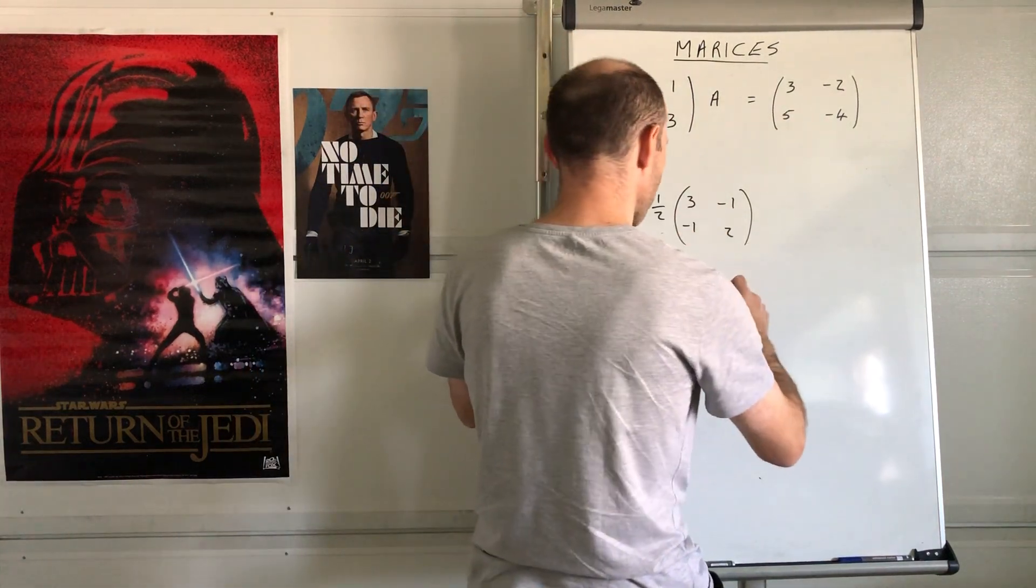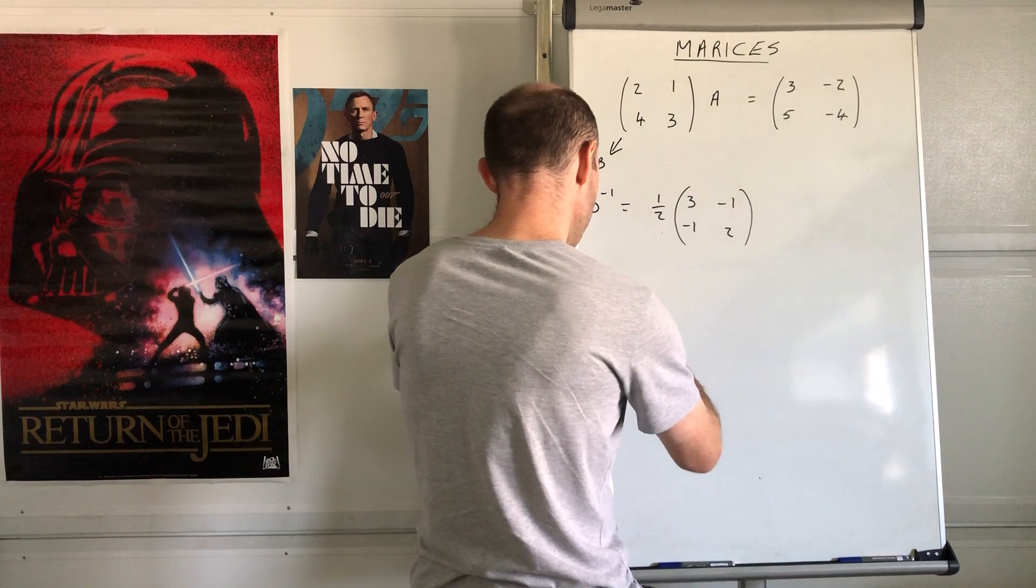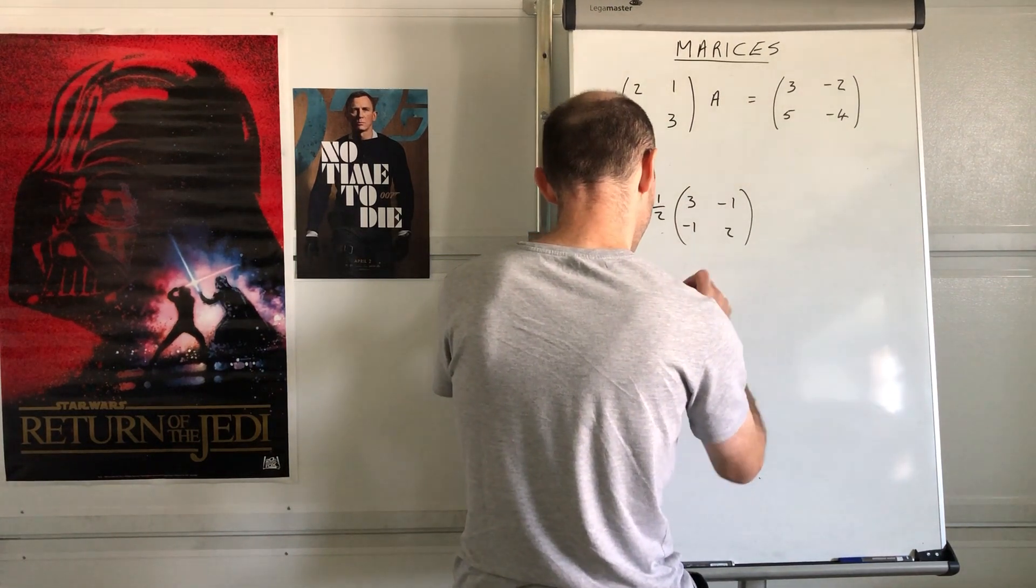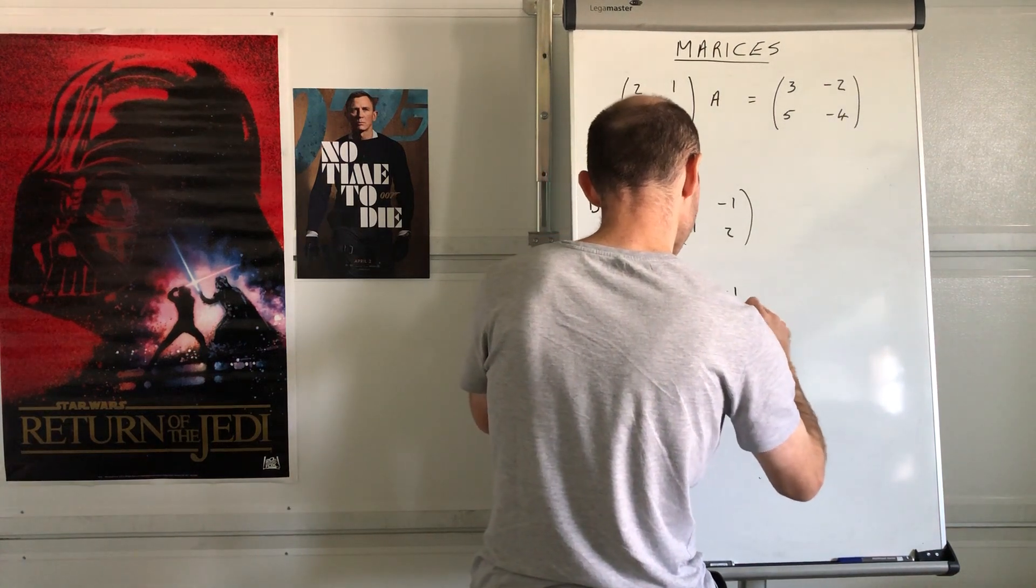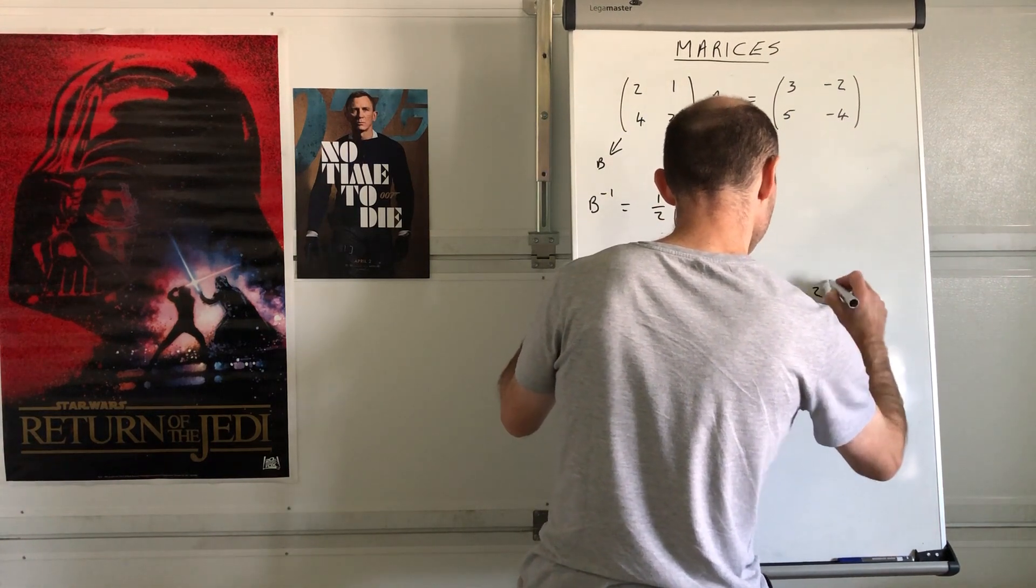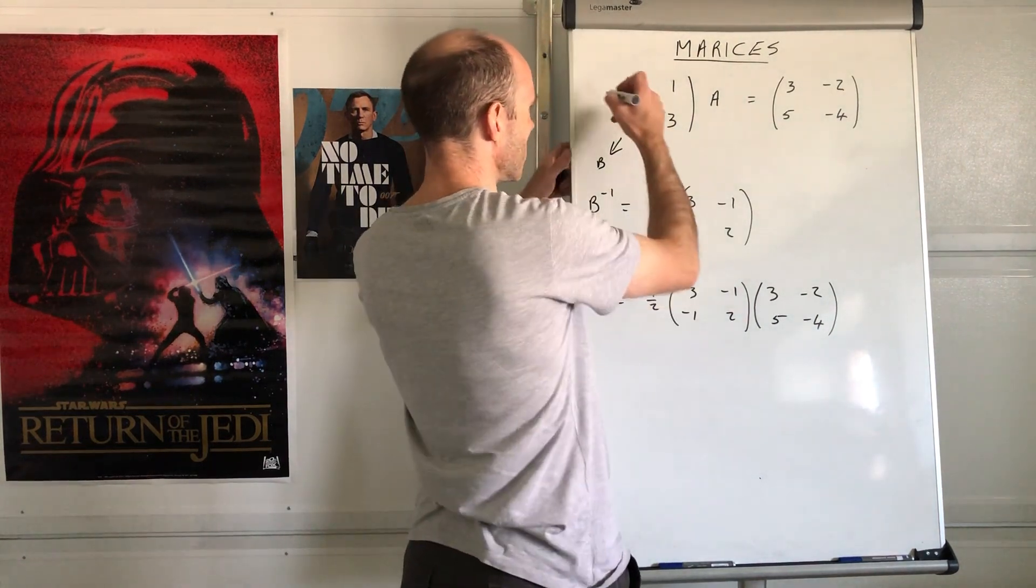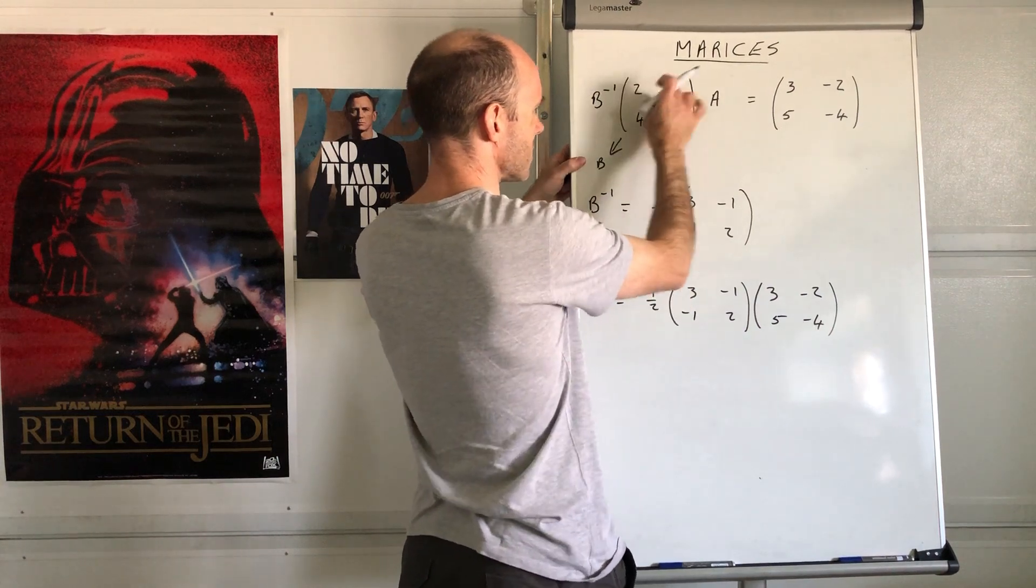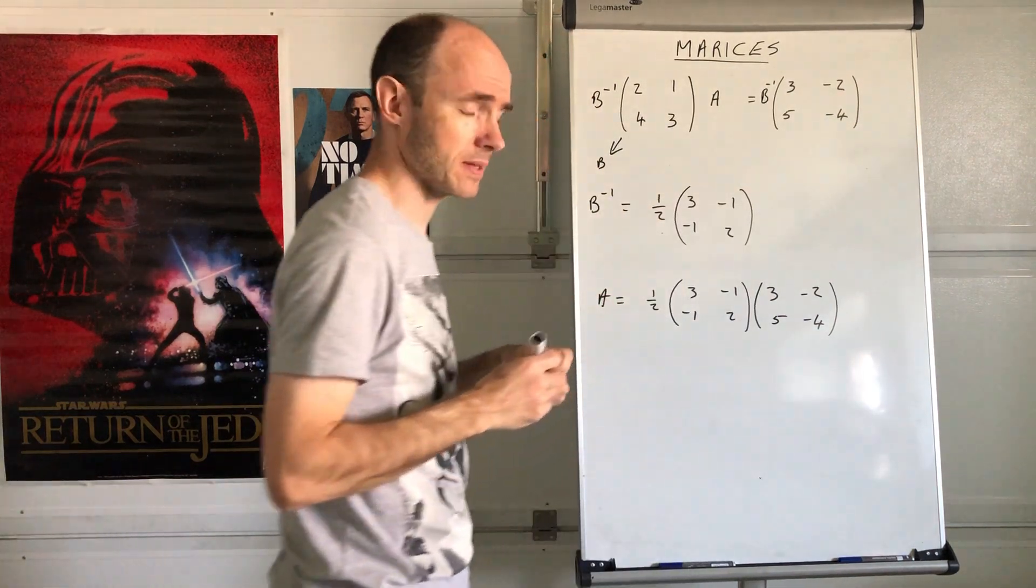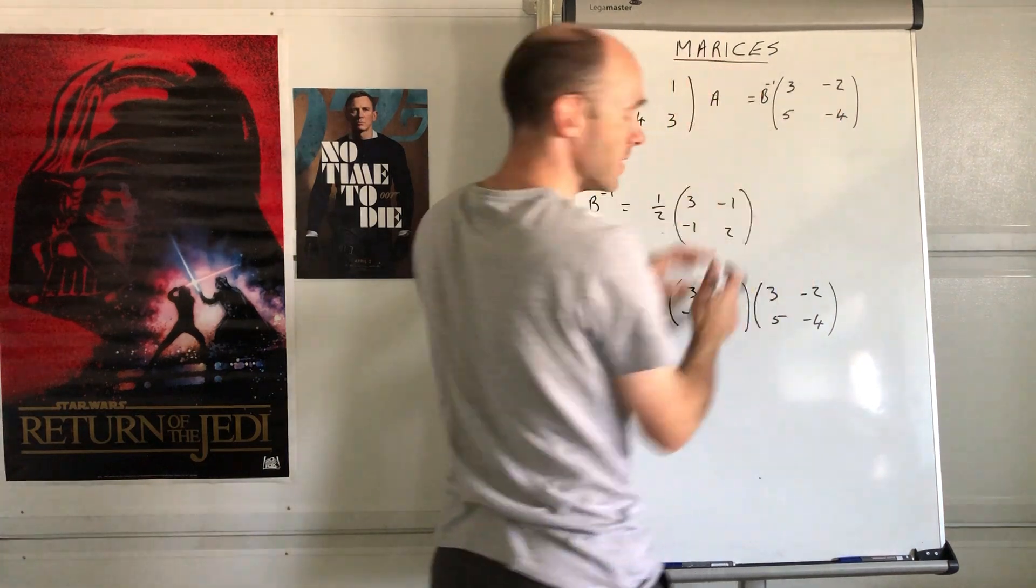So that's the inverse of B. So what that means is that matrix A should be that multiplied by that in that order. So 1/2 times 3, -1, -1, 2 multiplied by 3, -2, 5, -4. Do you see that? Because of what I mentioned earlier, rewind the video if you want to see it. But what I'm going to do is B inverse times that is equal to B inverse times by that. And then that's the identity, and the identity times A is just A.